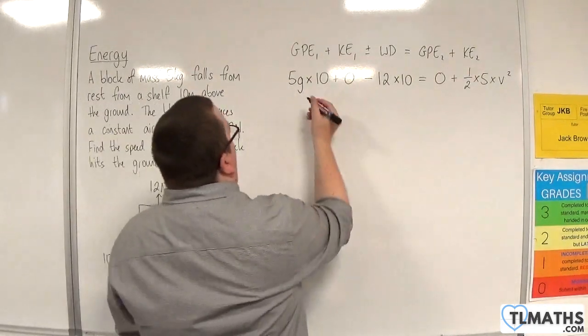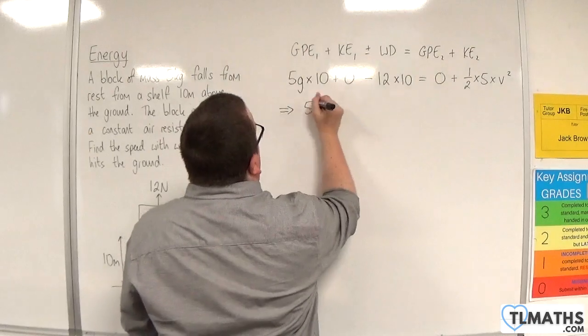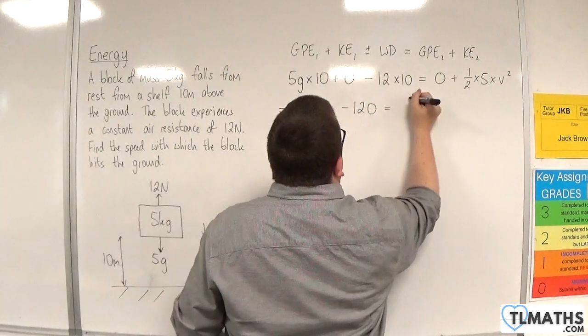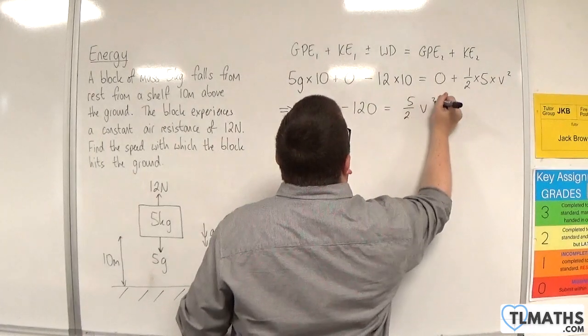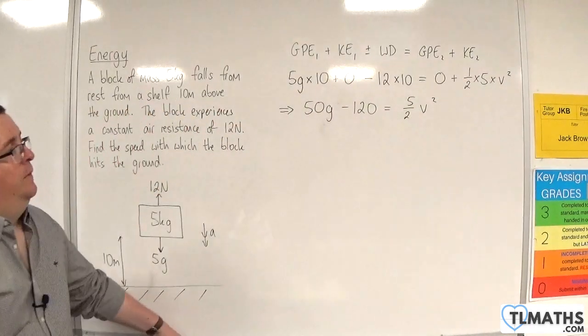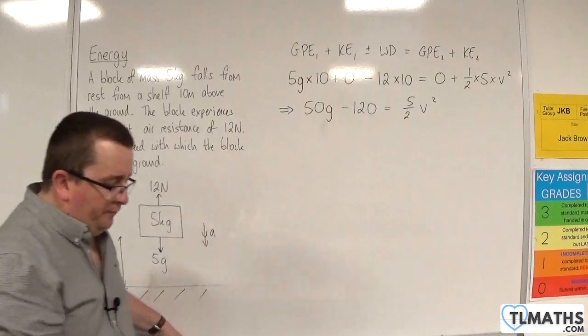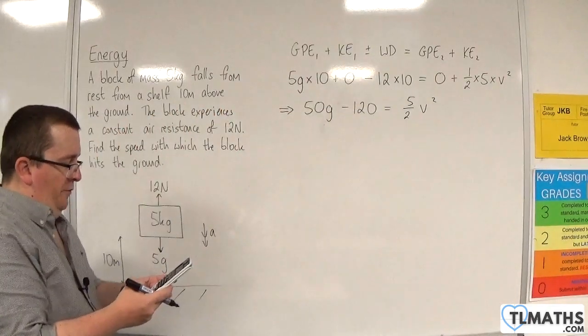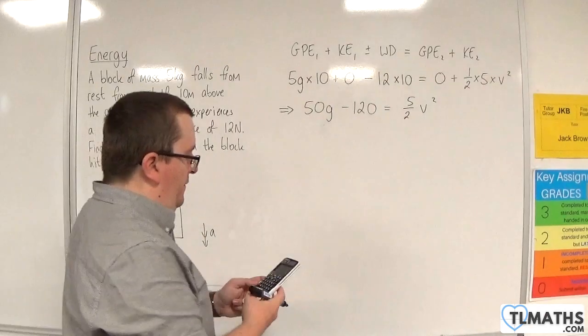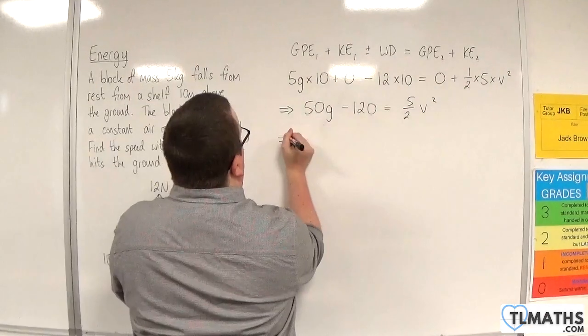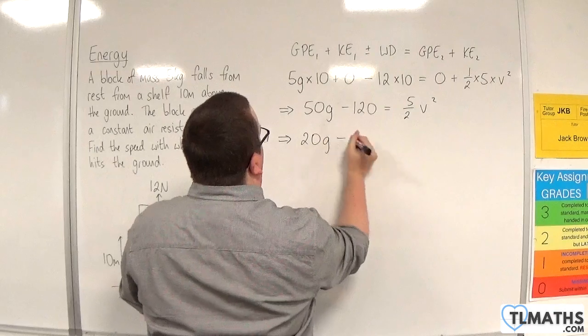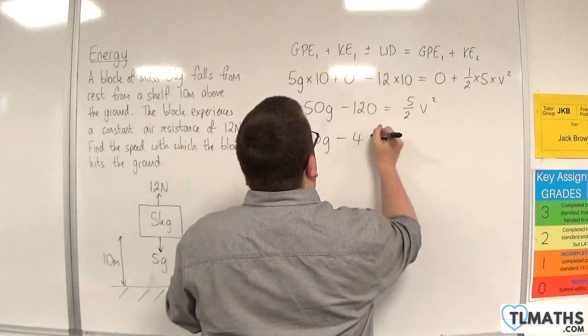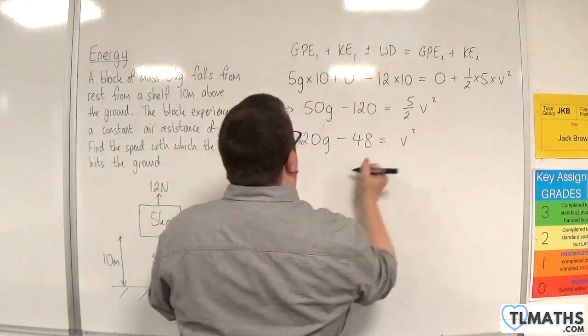So, we have 50G take away 120 is equal to 5 halves V squared. If I divide through by 5 halves, I'm going to get 20G. 120 divided by 5 halves is 48, is equal to V squared.